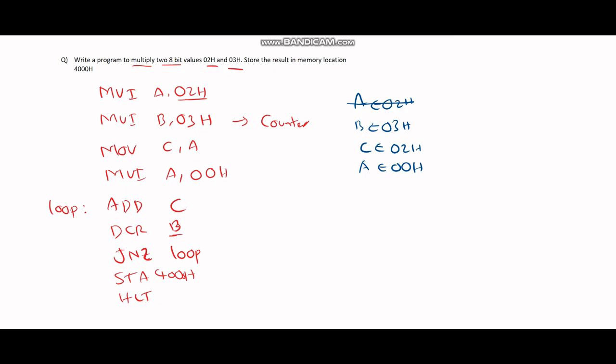Now, what we're going to do is add C to the accumulator, which means A plus C is going to be 2. So in the first loop, A plus C is going to be 2, which means the value of A is going to be 02H.